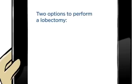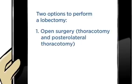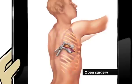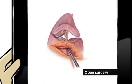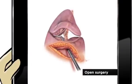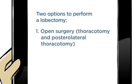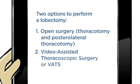To perform the surgery, doctors have two options. One way is called open surgery, also called thoracotomy or posterolateral thoracotomy. With open surgery, your surgeon will make one large incision in your chest between two ribs, which will be spread to allow the surgeon room to perform the surgery. The procedure involves the cutting of muscle, and the ribs are spread with a device specifically made for that purpose.